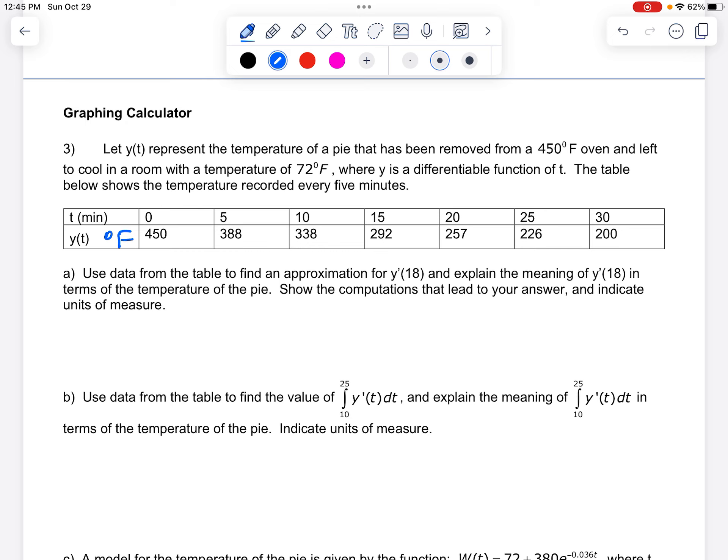use the table to find an approximation for y prime. So I want an approximation for the derivative of y or the slope of the temperature at 18 minutes. I don't have an equation, so we're not going to come up with an exact value, but the best estimate is going to be using these numbers because that's the closest to 18.